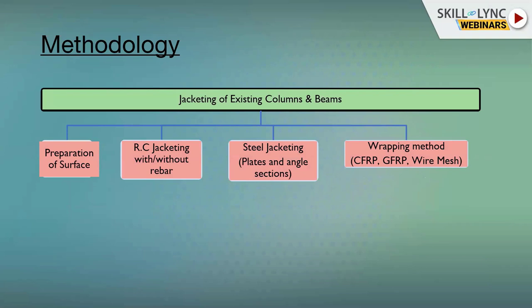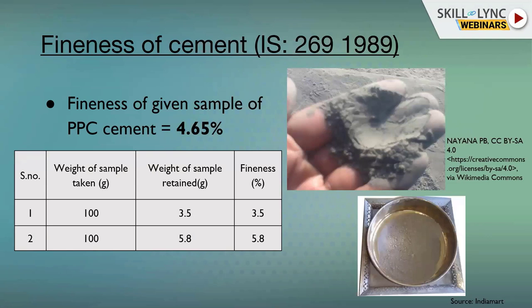Knowledge of material tests is essential for every civil engineer. Tests are conducted on cement, coarse aggregates, fine aggregates, and steel. On a job site or during an interview, you will be asked about fineness of cement, workability of cement and concrete, and compressive strength. These are fundamental material knowledge areas every engineer must possess.